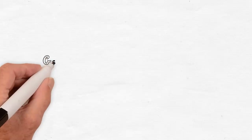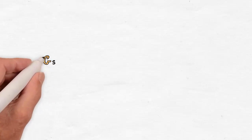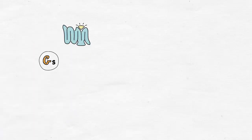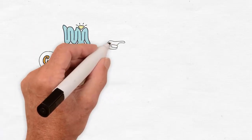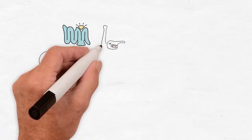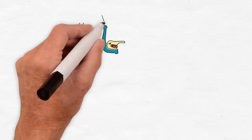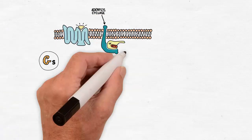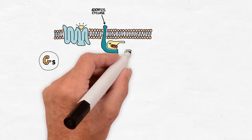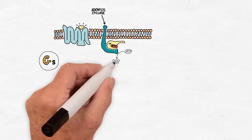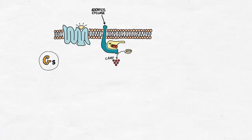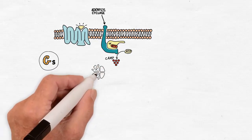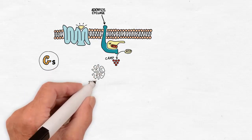If the activated alpha subunit is of the S type, this makes a GS protein and this alpha subunit, when activated, stimulates adenylyl cyclase enzyme. This enzyme uses ATP as a substrate to produce cyclic AMP as the second messenger. Cyclic AMP activates cyclic AMP-dependent protein kinase A or PKA.